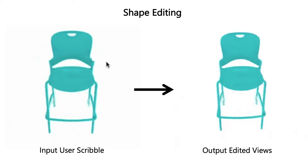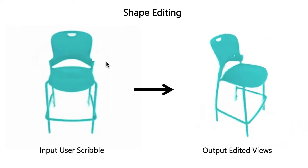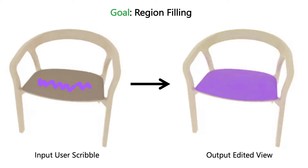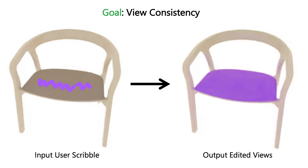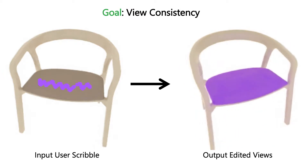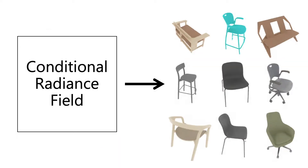We address two key challenges in our work. First, how can we effectively propagate a user edit? Specifically, we hope to fill the user's desired region, not to overfill to undesired regions, and to render the edit consistently across novel views. To address this challenge, we learn a rich prior of plausible-looking objects by training a single radiance field over several object instances.